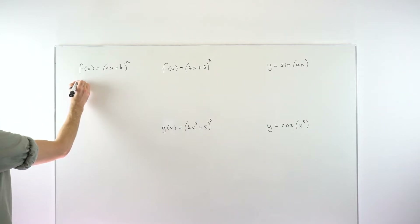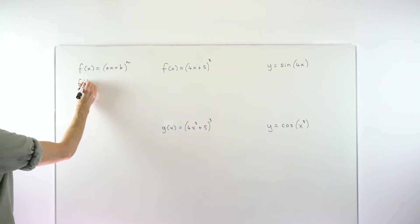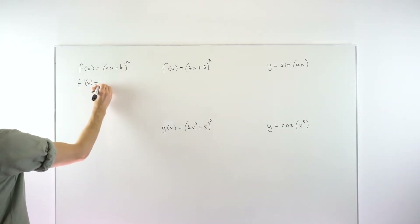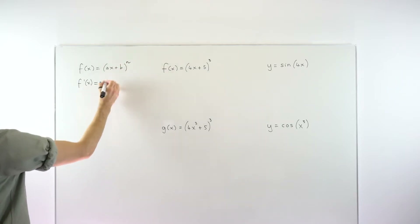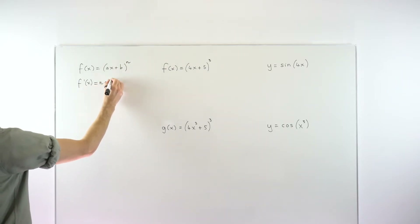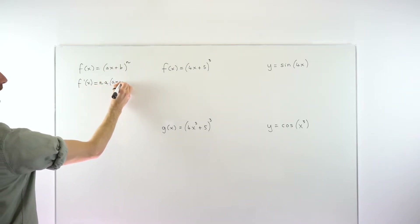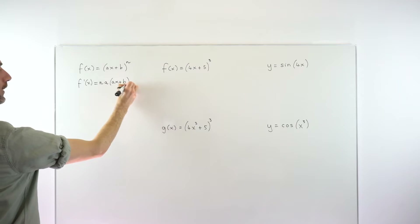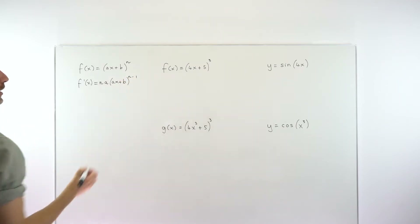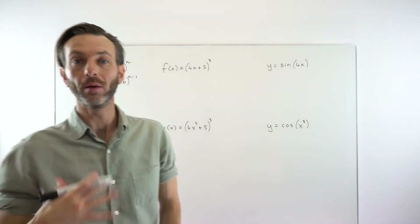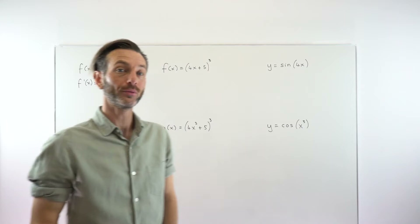Essentially they learn a formula — they learn that f prime of x, the derivative, is going to be equal to n times a: the power times the number, then leave the bracket alone, and then take one off the power. And essentially they'll just learn to apply that formula every time.